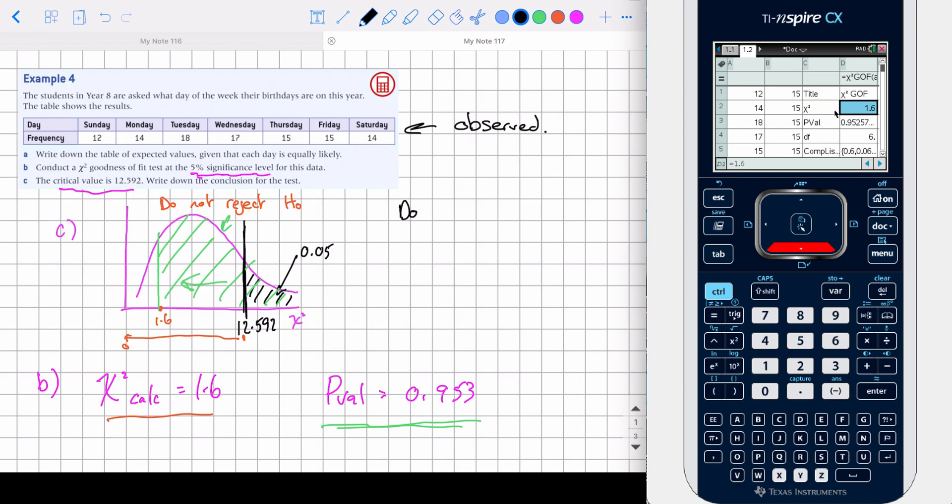So C, do not reject. Reject. H-zero, or you can say accept H-zero, but it says, write down the conclusion for the test, but we need to give a reason. Accept H-zero.